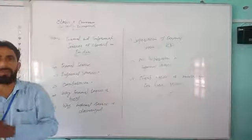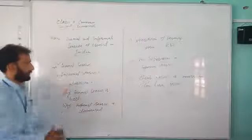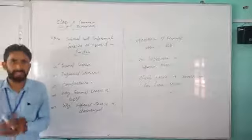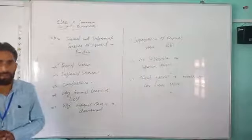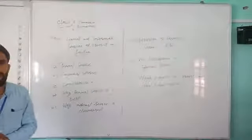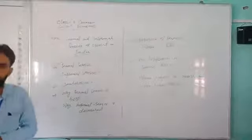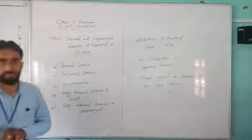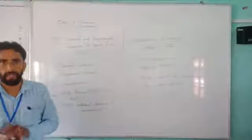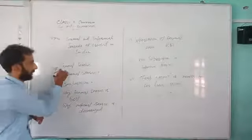First, the concept of formal source of credit. A formal source of credit is that kind of source where, when we are getting a loan, rules and regulations are followed. For example, when we take loans from banks and cooperatives, that is the case of taking a loan from a formal source.